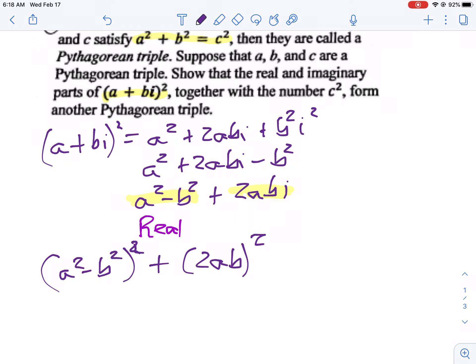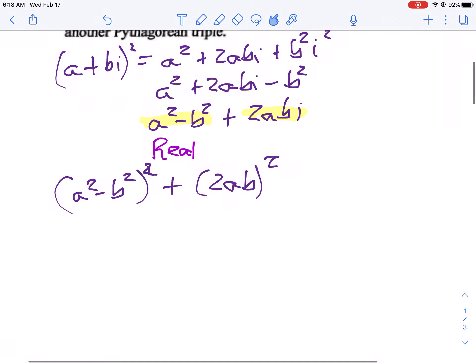It's kind of confusing. We have A squared and B squared. We have A, B terms in there. Now let's simplify that. So I'm going to get A to the fourth minus 2A squared B squared plus B to the fourth. Then I'm going to square 2AB. So I'll get 4A squared B squared.